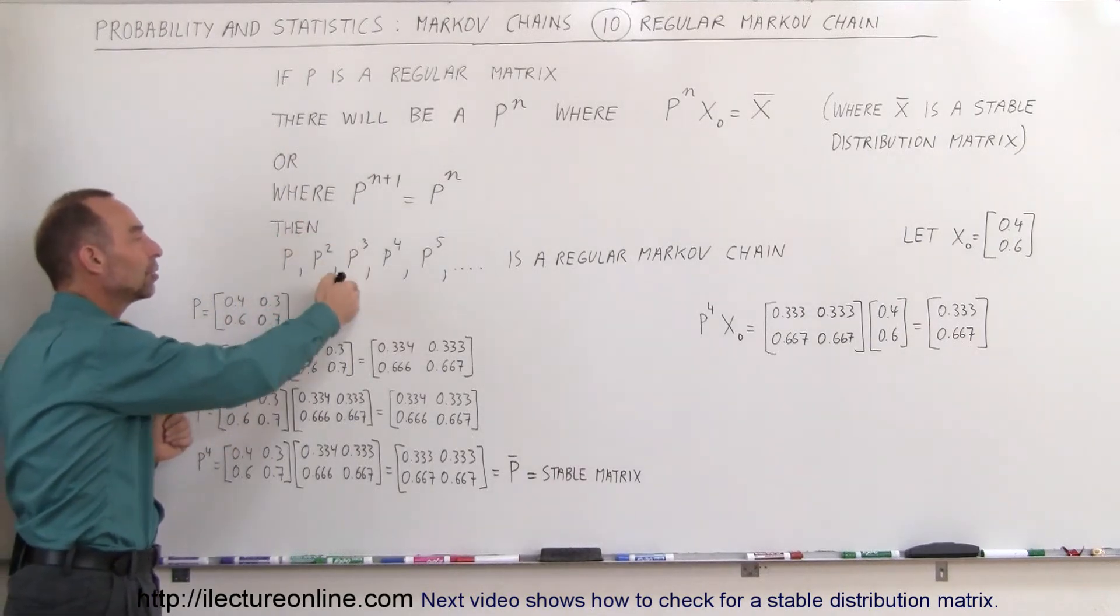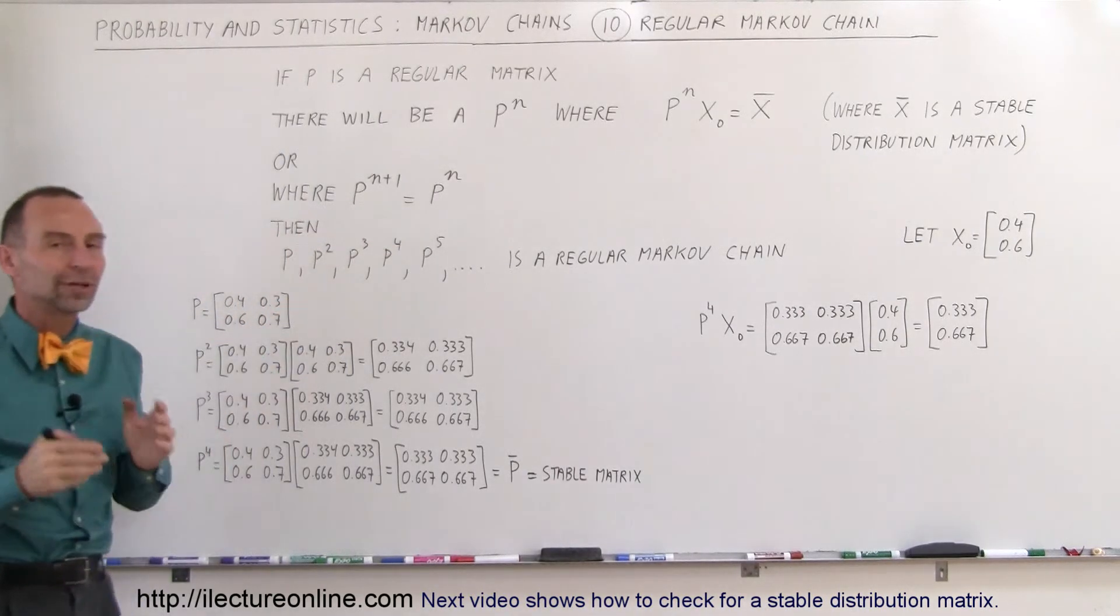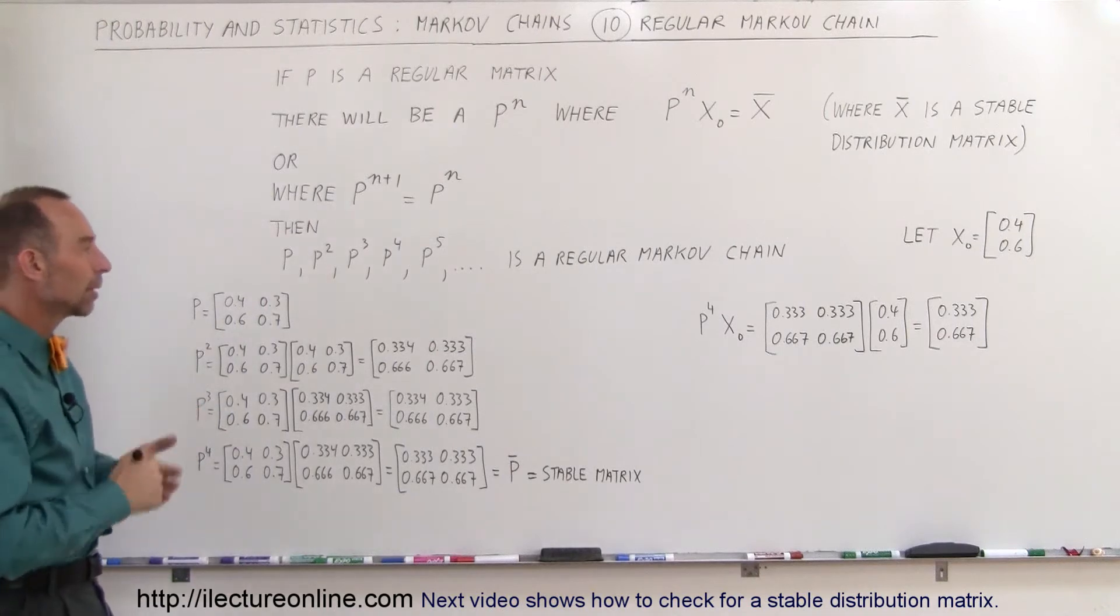So that P, P squared, P cubed, P to the fourth, P to the fifth and so forth is indeed what we call a regular Markov chain.